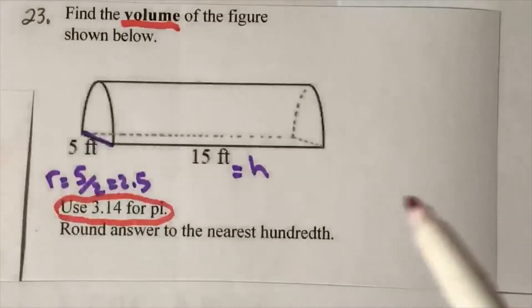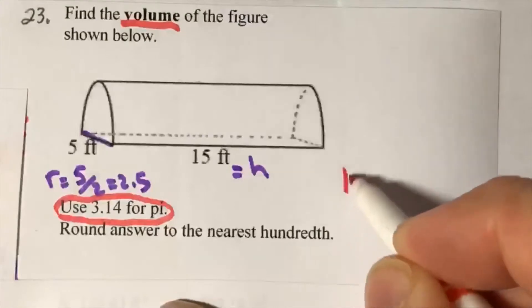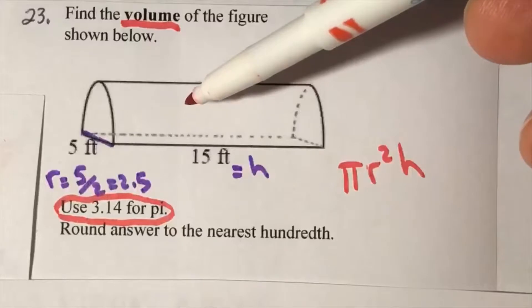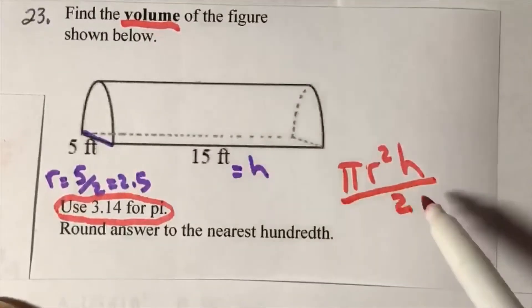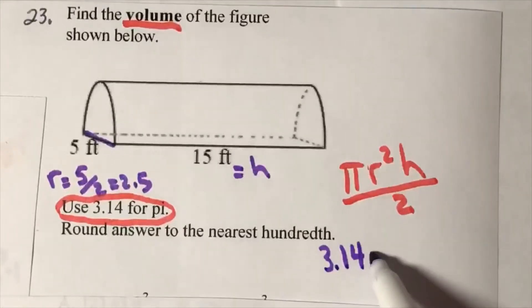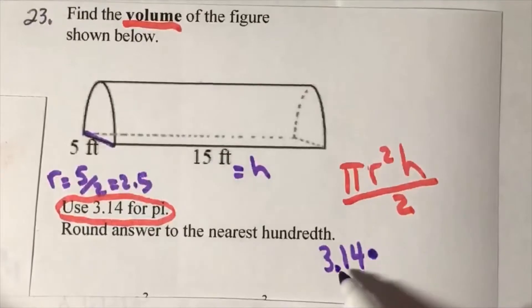So I've got pi r squared h. You've got to identify that this is a half cylinder, so you divide by 2. Pi is to be replaced with 3.14.